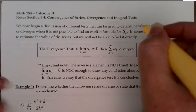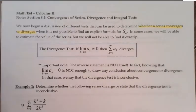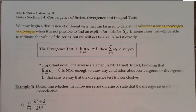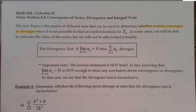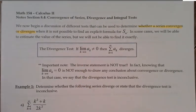So your answer from now on is just going to be to decide: does the series we're looking at converge — that is, would it come to a finite value if we could sum it up — or does it diverge, does it go off to infinity? In order to determine this, we're going to look at a number of different tests. We'll end up with about six or eight different tests to talk about whether series converge or diverge. And in this section, 8.4, we're going to look at the first two tests, called the divergence test and the integral test.